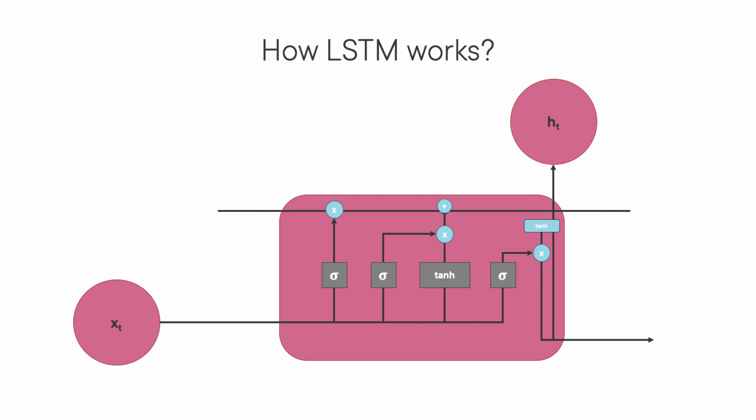At a certain state, we are multiplying whatever this value is with the state value. So the cell state is modified. If that value is 1, then we are not modifying the state value. Next, here we are doing an addition. That's all about the cell state.